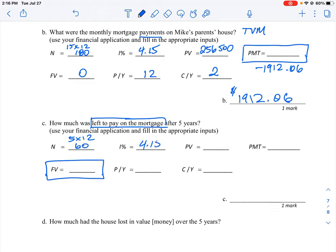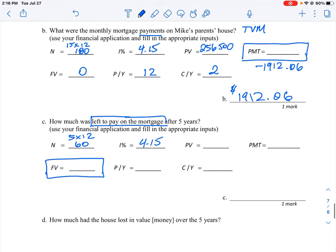The interest rate is still 4.15. The present value is what we started at because this is the first five year cycle. So we started with a $256,500 loan. We know our payments. We calculated that already in the previous question. It's 1912.06, that's the payment each month. And we're still doing 12 and two.